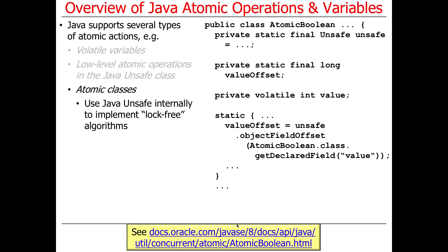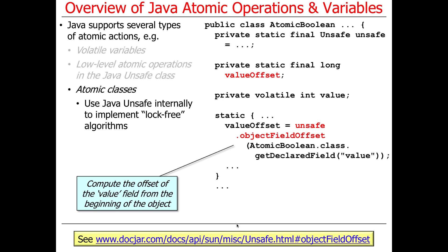Java also provides a bunch of atomic classes, including AtomicBoolean, AtomicInt, AtomicLong, and AtomicReference. These classes all use the Java Unsafe class and its compareAndSwap methods in order to implement lock-free algorithms. Here's how AtomicBoolean works — it's really interesting.